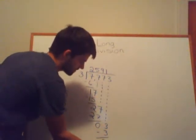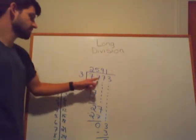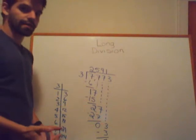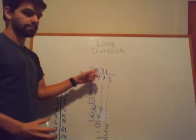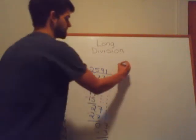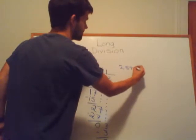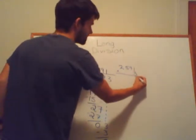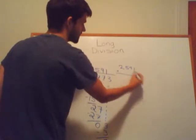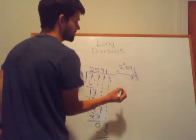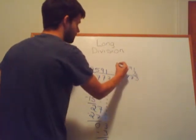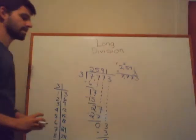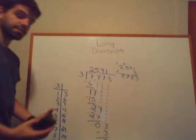We get a remainder of 0, which tells us that 3 goes into 7,773 evenly — 2,591 times. We can check our answer by multiplying the quotient by the original divisor: 2,591×3 should give us 7,773. Let's verify: 1×3=3, 9×3=27 carry the 2, 5×3=15 plus 2 is 17 carry the 1, 2×3=6 plus 1 is 7. That gives us 7,773. Correct!